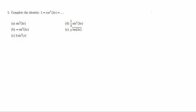Hey guys, welcome back. So now we are working on problem number five, and the question says, complete the identity 1 minus cosine squared of 3x equals what?